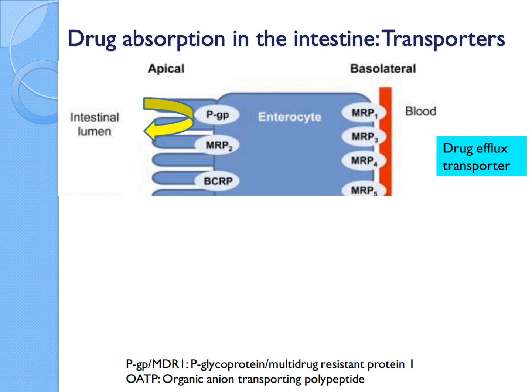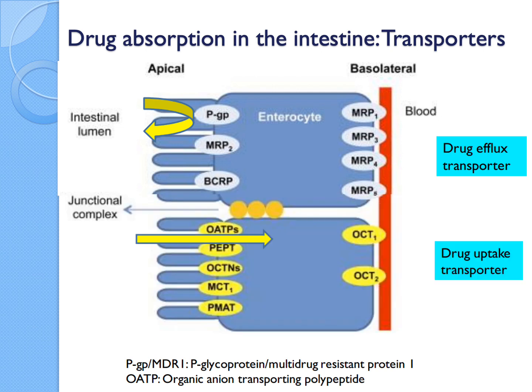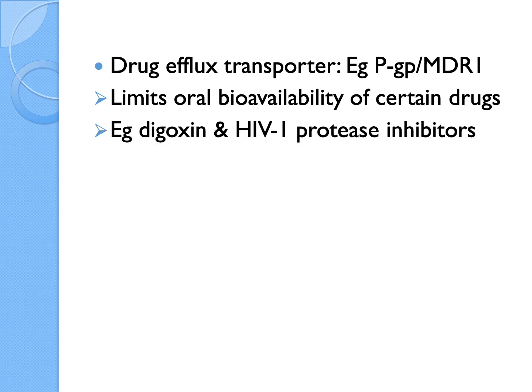This efflux pump is called P-glycoprotein, one very famous example. Its other name is multidrug resistant protein 1 because it's the same molecule available on cancer tissues. If it's upregulated by some cancer cells, the concentration of chemotherapy drugs that can accumulate within the cells is much lower than intended, so the cells may not be killed as you want. Some cells may survive. There are also uptake transporters which help in absorption, such as OATP — organic anion transporting polypeptide — which helps more drugs to be absorbed across the membrane.